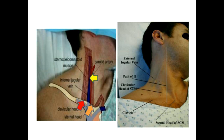Having identified the sternal head and the clavicular head of the sternomastoid, let us define the triangle. The base of the triangle is formed by the clavicle. The medial side of the triangle is formed by the sternal head, the lateral side by the clavicular head, and the yellow arrow indicates the uppermost point of the triangle. Inside this triangle you can visualize the internal jugular vein.